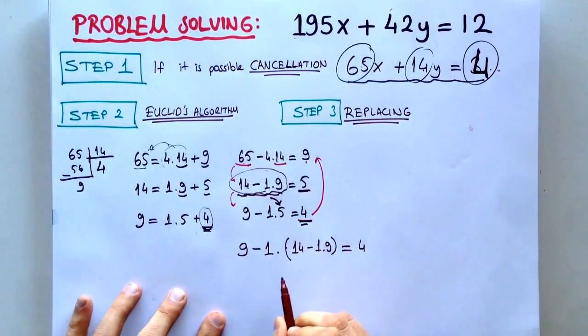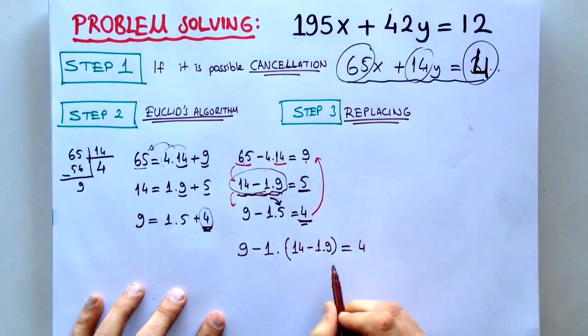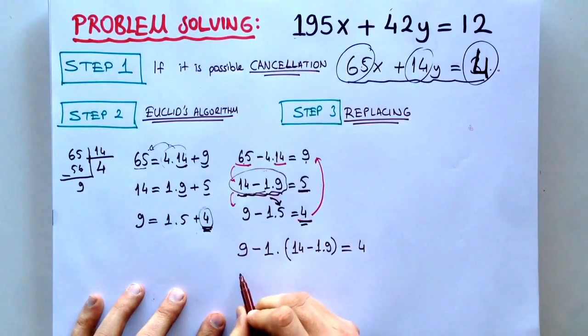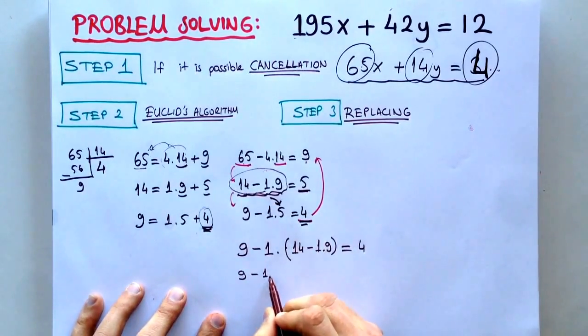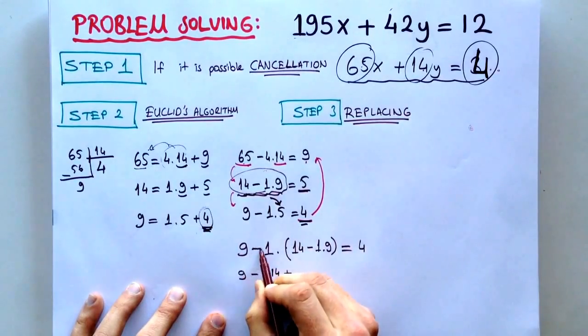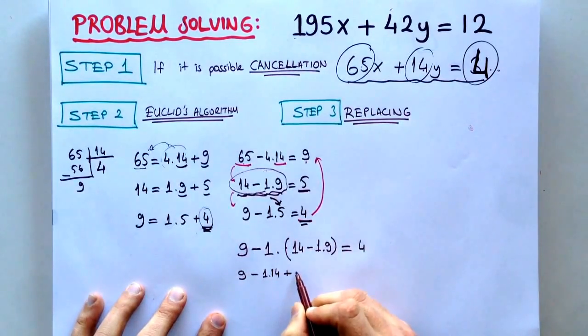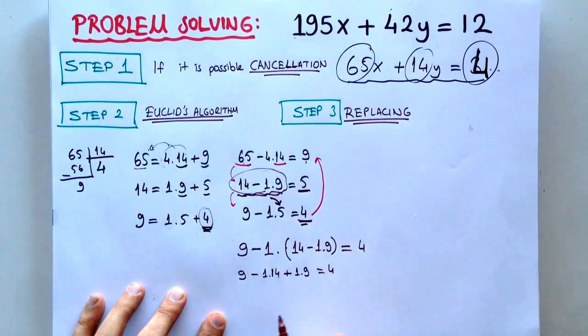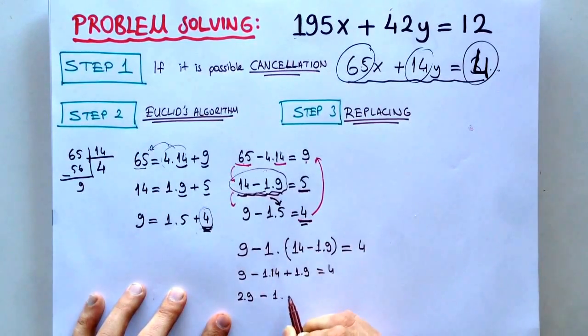If we do that again, but first we have to arrange this in order. 9 minus 1 times 14 plus, because it's minus minus, it makes 1 times 9, it's 4. If you do that in order, 2 times 9 minus 1 times 14 is equal to 4.